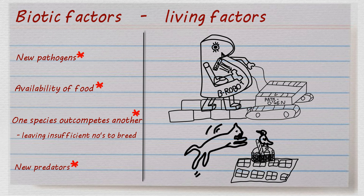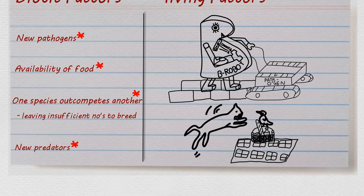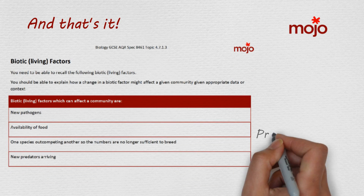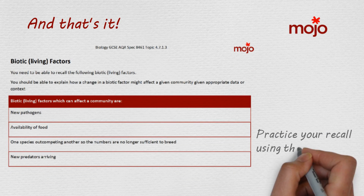And that is how to recall the biotic — living — factors that affect a community. Now have a go at the quiz and the worksheet to get your recall synapses going, which will reinforce the memorization process.